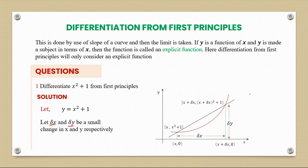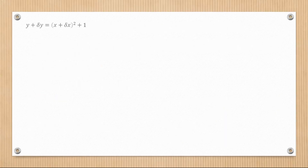We're going to follow these steps: first, fill in the slope formula — which is Δy over Δx. Then simplify that formula as best we can. After that, to get the final answer, we make Δx shrink towards zero.